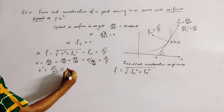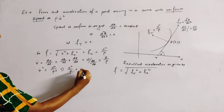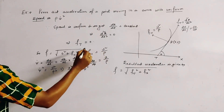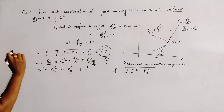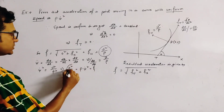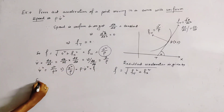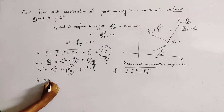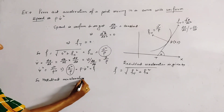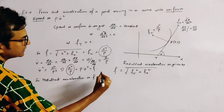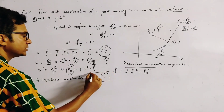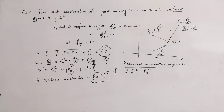Therefore ψ̇² = v²/ρ², which gives v²/ρ = ρ·ψ̇². Since the resultant acceleration f = v²/ρ, we conclude that f = ρ·ψ̇², which completes the proof.